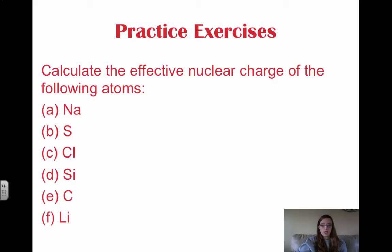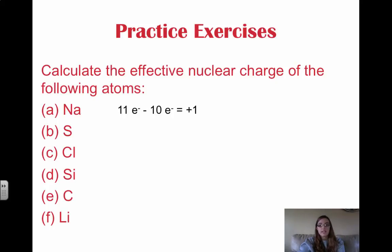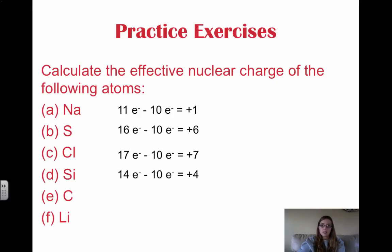Now some practice exercises: calculate the effective nuclear charge for the following atoms. Writing the electron configuration first will help in determining the number of core electrons. Sodium is +1: 11 protons minus 10 core electrons. Sulfur has 16 protons, so it's +6. Chlorine is +7, silicon is +4, carbon is +4, and lithium is +1. Remember: you take Z (the number of protons) minus the number of core electrons to get your effective nuclear charge.